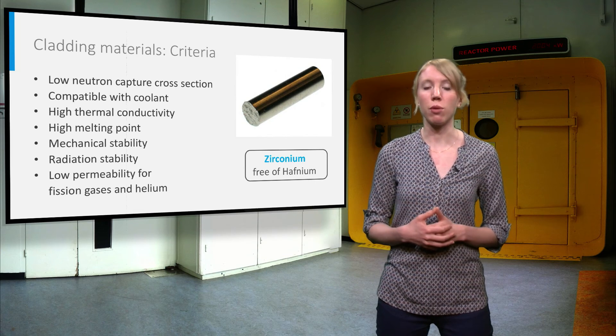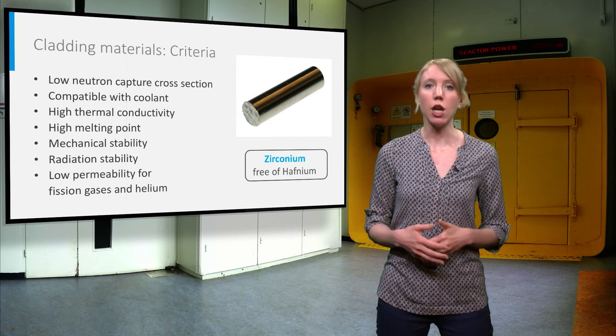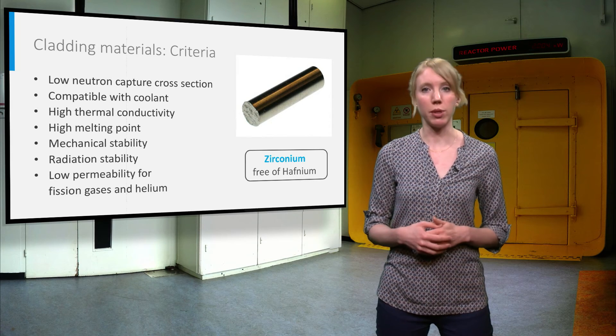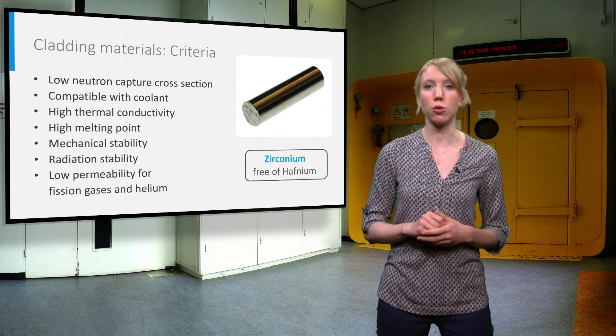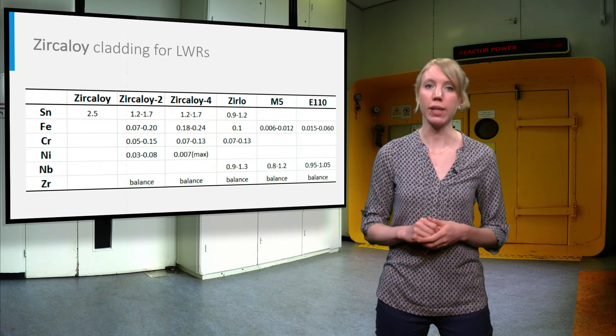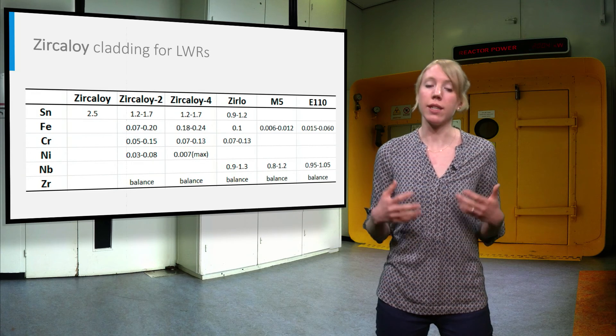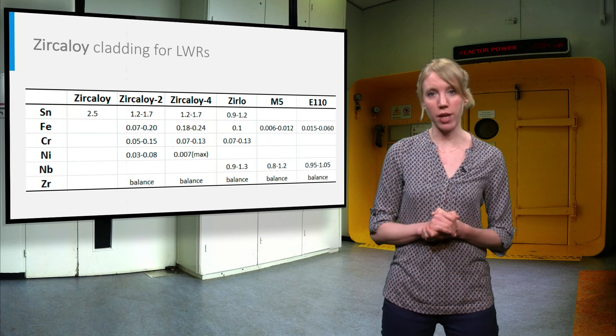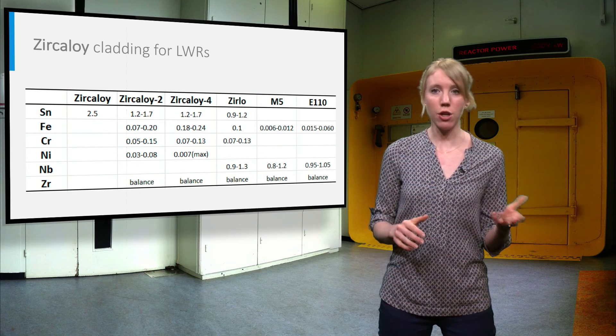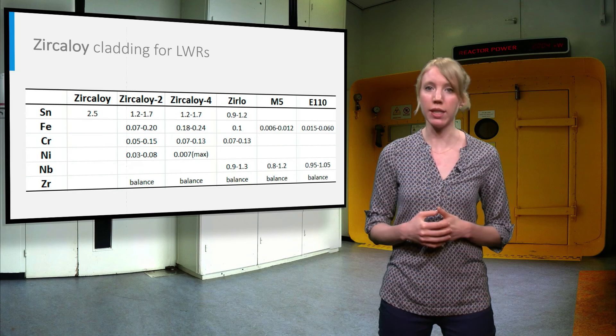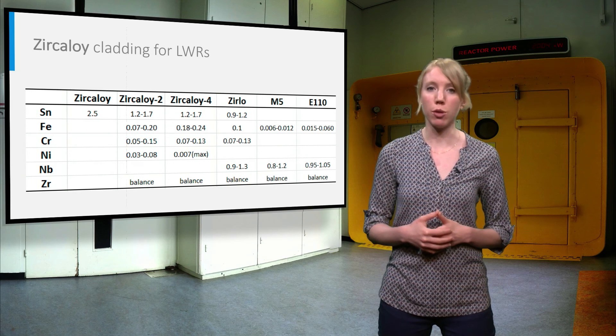Hafnium is an element with very similar chemical properties but with very different nuclear properties. It is a strong neutron capturing material. Pure zirconium metal is too brittle for practical use, however. Zircaloy, an alloy of zirconium and tin, has been developed to overcome this shortcoming.